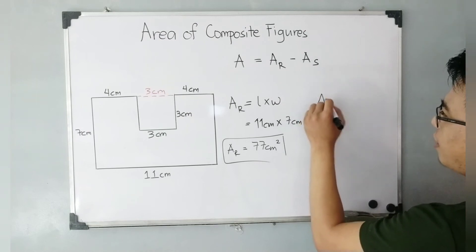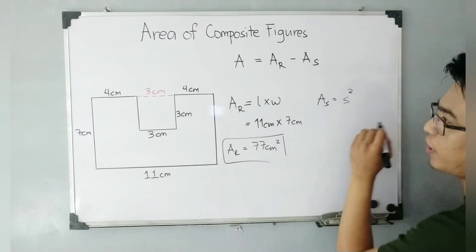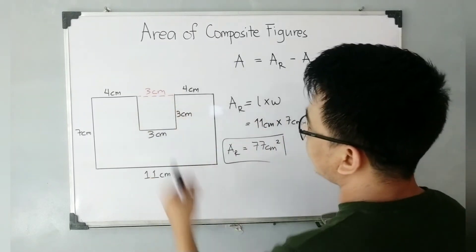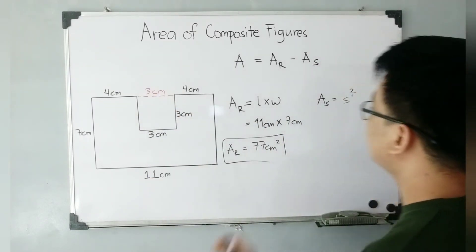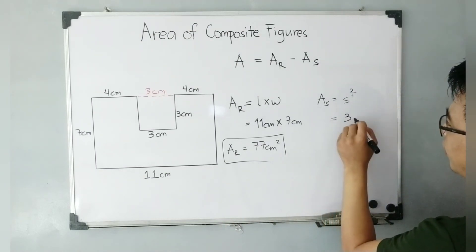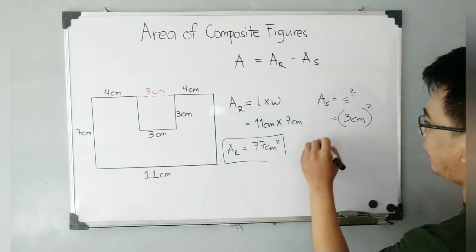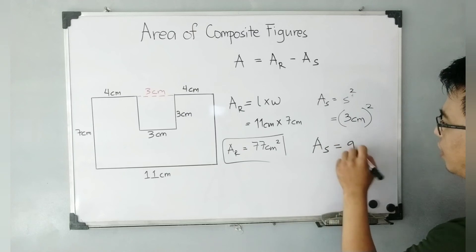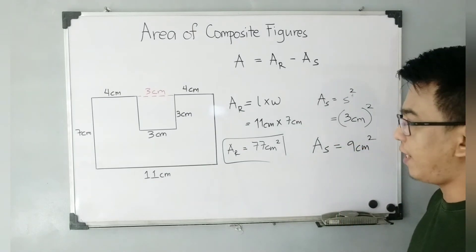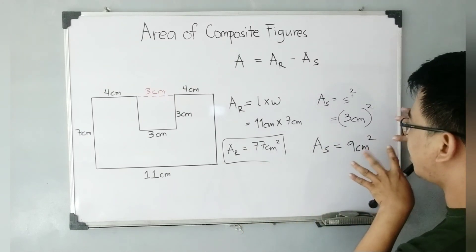Now for the area of the square, the formula is s squared. As you can see, the sides of this square are three centimeters, so s equals three. That gives us three centimeters squared, or three times three, which equals nine centimeters squared.